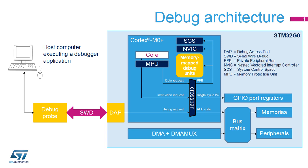The Debug Access Port, or DAP, enables an external debug probe to access any memory-mapped resources also accessible from the Cortex-M0+ core. Note that the Memory Protection Unit, or MPU, does not intercept the requests initiated by the DAP.